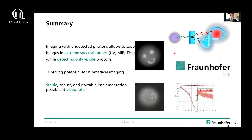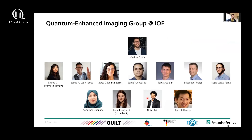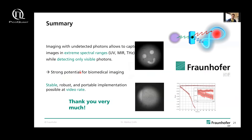To summarize: imaging with undetected photons allows you to capture images in extreme spectral ranges — UV, mid-infrared, and terahertz — by only detecting visible light, which can make a huge impact especially for biomedical imaging. In the long wavelength range there are a lot of applications, and you can overcome severe issues faced there. What we could show in our work so far is that a stable, robust, and portable implementation can be done, and we can also run this compactified setup at video rate. I'd like to give credits to the funding agencies and to the people who made this work possible — especially Sebastian, Martha, and Joshua. Thank you for your attention, and I'm open for questions.